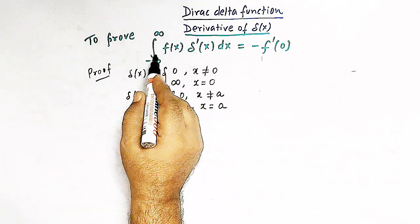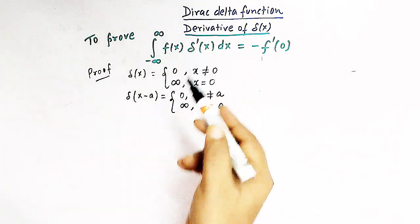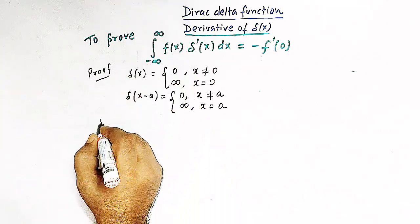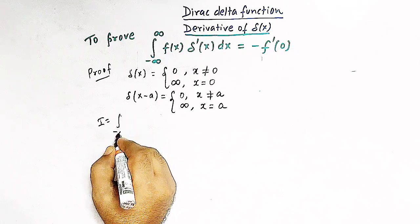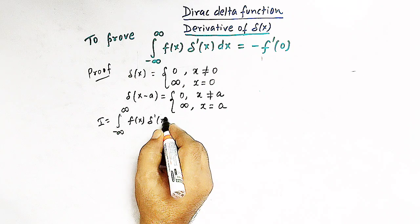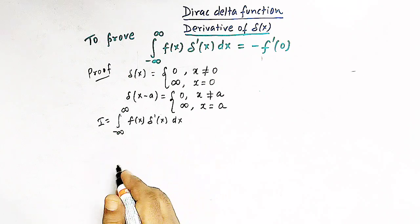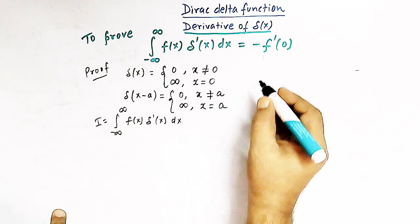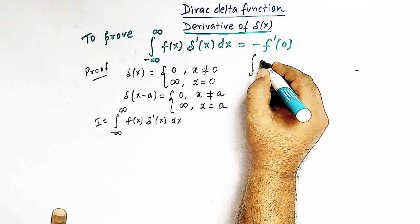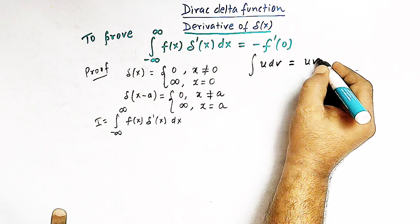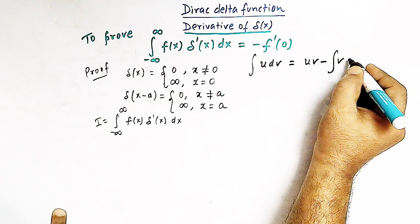Let us assume that the derivative of the delta function exists, and let us call this integral as I. We have I equals the integral from minus infinity to infinity of f(x) times delta prime of x dx. We will make use of the method of integration by parts.